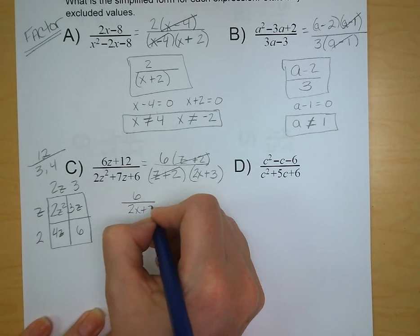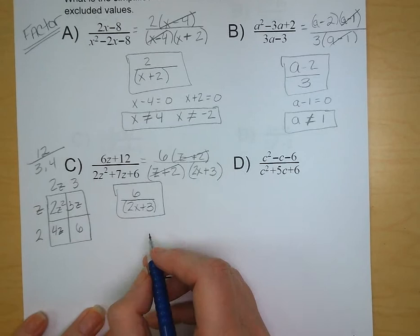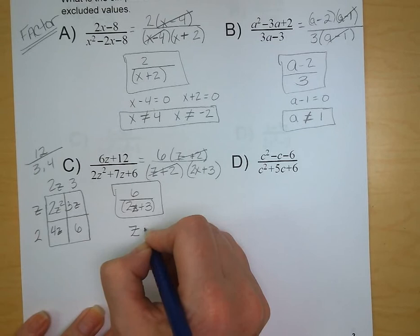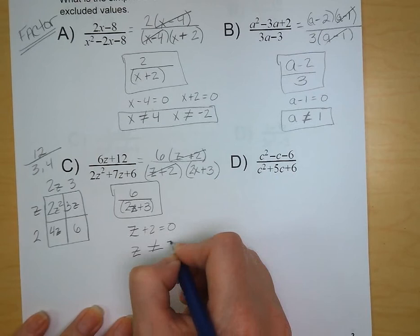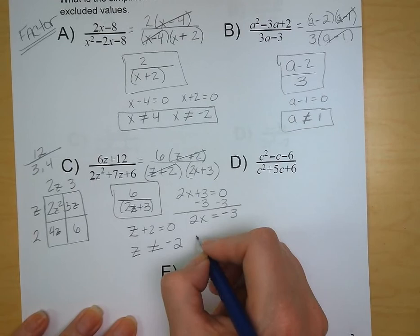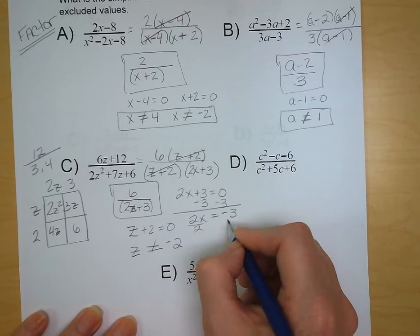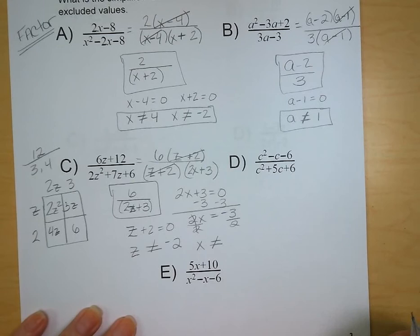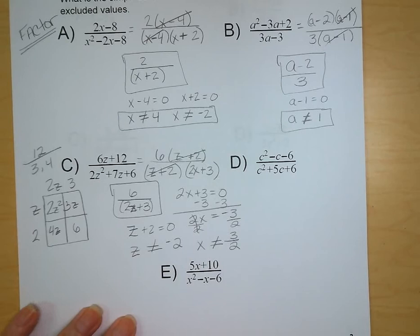Our two excluded values: set z plus 2 equal to 0, so z cannot equal negative 2. And 2z plus 3 equals 0, so z cannot equal negative 3 halves.